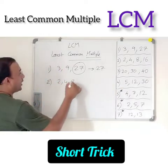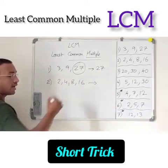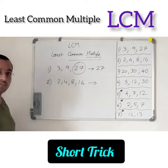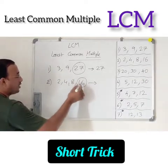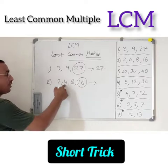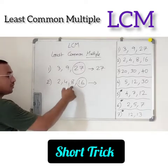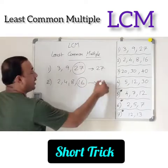Let us go with the second one: 2, 4, 8, 16. What is the largest number? 16. Is it divisible by 2? Yes. Is it divisible by 4? Yes. Is it divisible by 8? Yes. Therefore, 16 is the LCM.